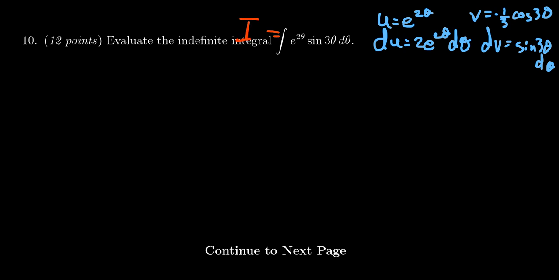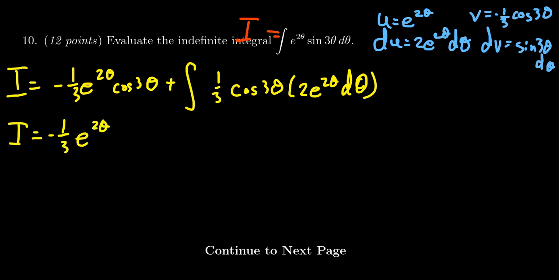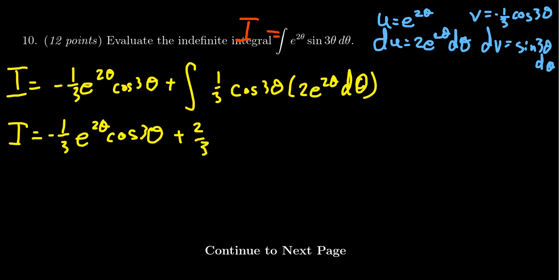Applying integration by parts, I equals negative one third e to the two theta cosine of three theta, minus the integral of v du, which is negative one third cosine of three theta times two e to the two theta d theta. Simplifying the signs and pulling out the constant coefficients, we get negative one third e to the two theta cosine of three theta, plus two thirds times the integral of e to the two theta cosine of three theta d theta.